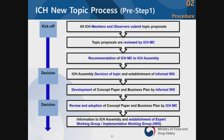All members and observers can submit potential topics, and the MC reviews the topics. The assembly can then decide on the development of a guideline on certain topics. An informal working group is formulated, and it works on a business plan and concept paper. Once these two documents are produced, the ICH assembly and implementation working group formally decide to develop a guideline on that topic.